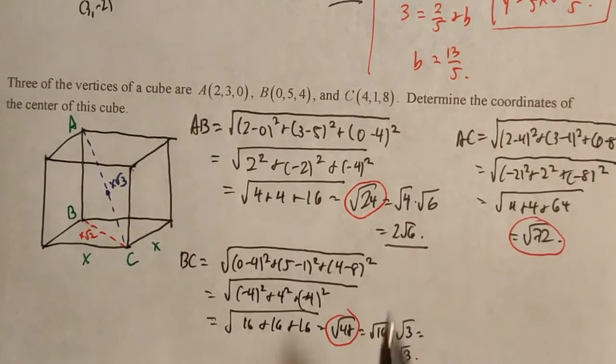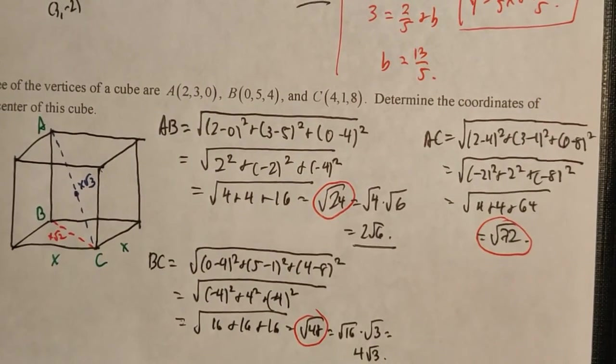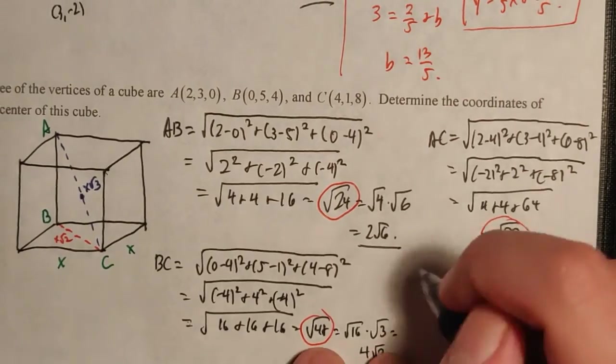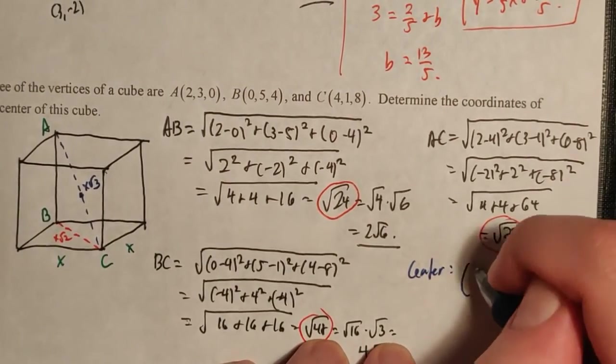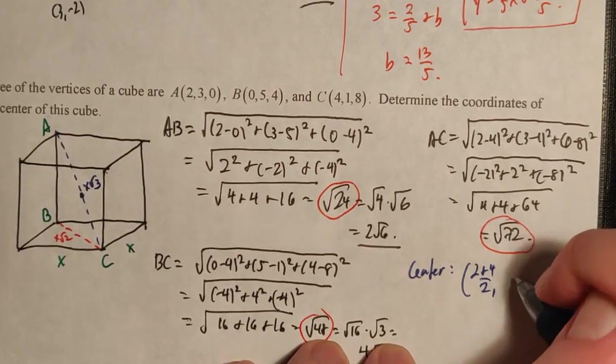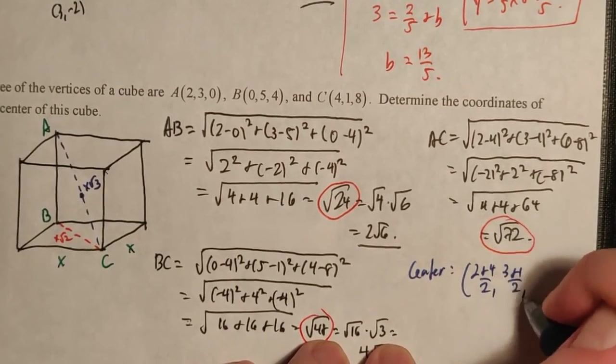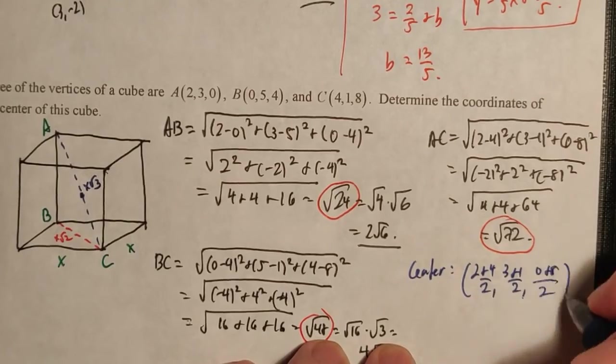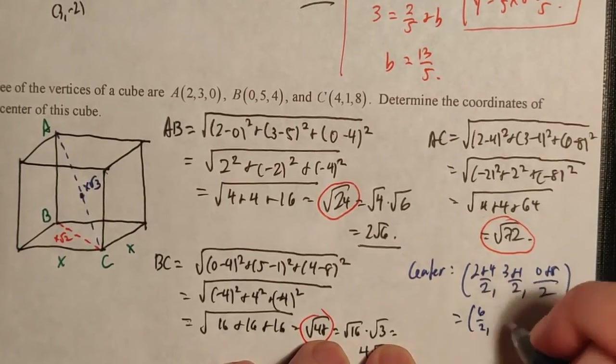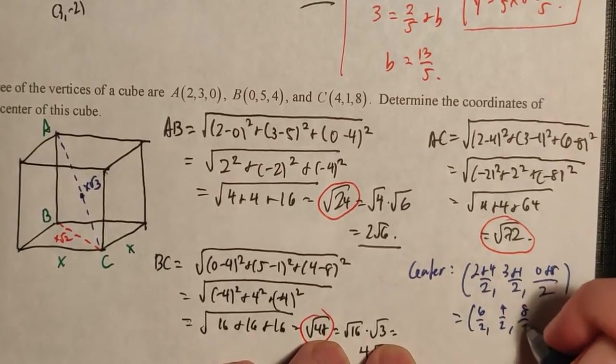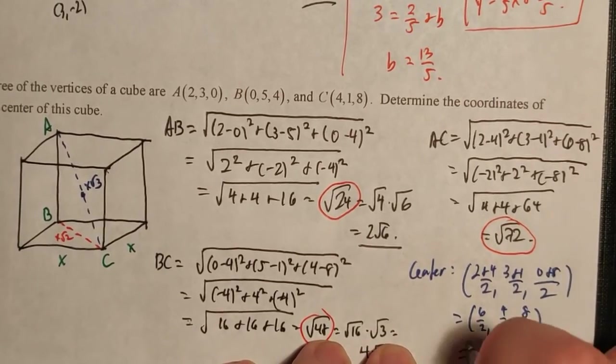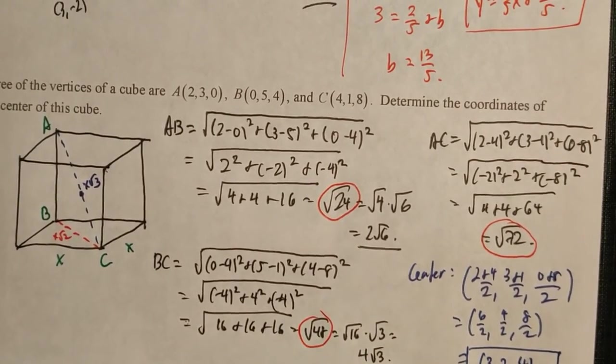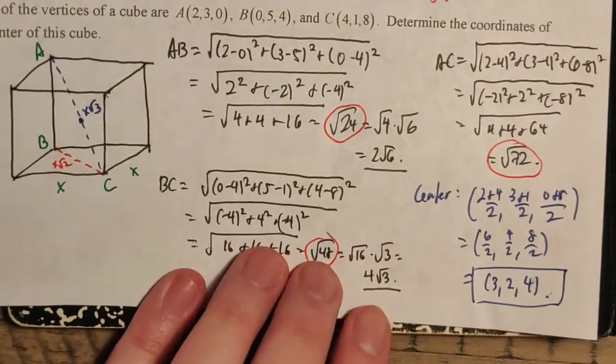So now we can determine the center of the cube. Now we can finish up the problem. The center is going to be the midpoint of A, C, which is going to be 2 plus 4 over 2, 3 plus 1 over 2, and 0 plus 8 all over 2. So that's going to be 6 over 2, 4 over 2, and 8 over 2. And it gives us the point 3, 2, 4. And that is the center of the cube.